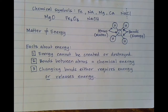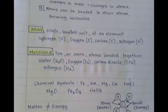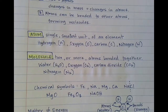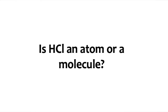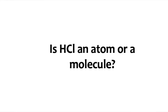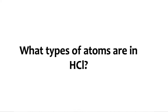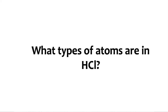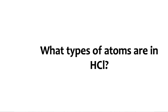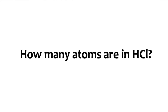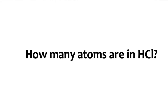Let's recap what you should know and be able to do. First, you should be able to tell the difference between an atom and a molecule. For example, is HCl an atom or a molecule? That's a molecule. You should also be able to tell what types of atoms are in a molecule — in HCl there's an H and a Cl — and how many atoms: there are two, one hydrogen and one chlorine.